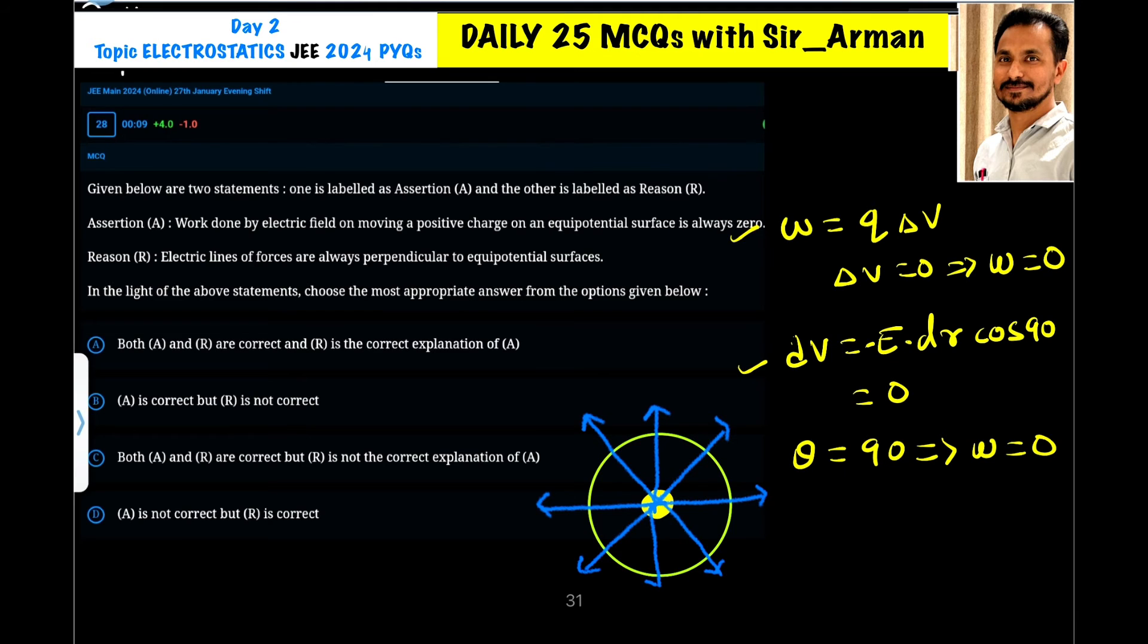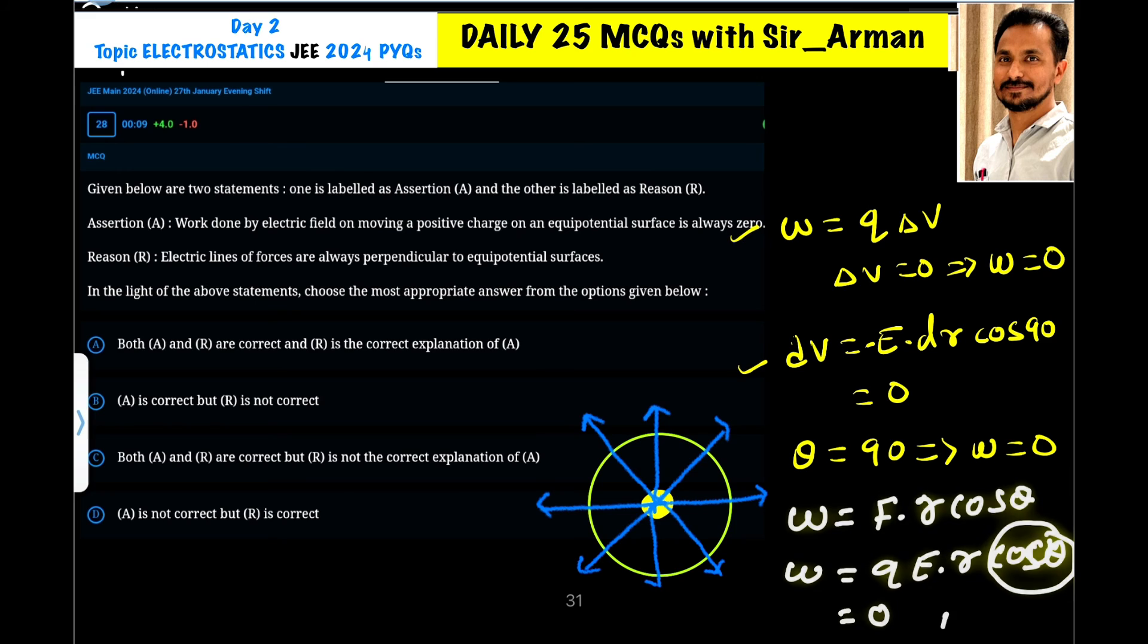Why it is the correct explanation? We also know that work done is equals to F dot r cos theta. Here the electric force is Q dot E r cos theta. This work done is zero. Why it is zero? Because cos theta is zero. And why cos theta is zero? Because theta is 90.